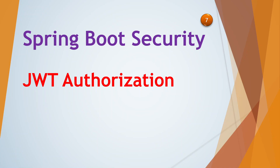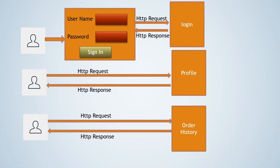In order to understand what is JWT-based authorization, let us first understand how authorization works in traditional e-commerce based web applications. For example, in an e-commerce application, customers will go through different pages like profile page, order history page, or delivery addresses page — pages that show user-specific information.